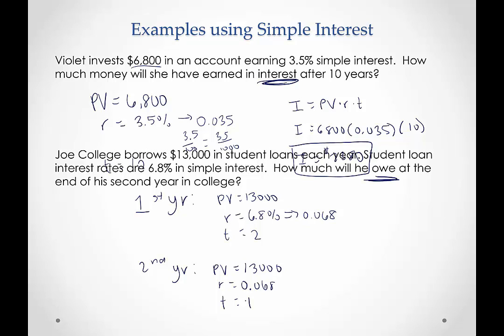It is asking for the total amount. So we want to use the future value formula: FV = PV(1 + rt). So for year one, the future value will be 13,000 × (1 + 0.068 × 2). And if we use our calculator here, we will get a future value for year one of $14,768. So by the end of his second year, that's how much he's going to owe from that original $13,000.